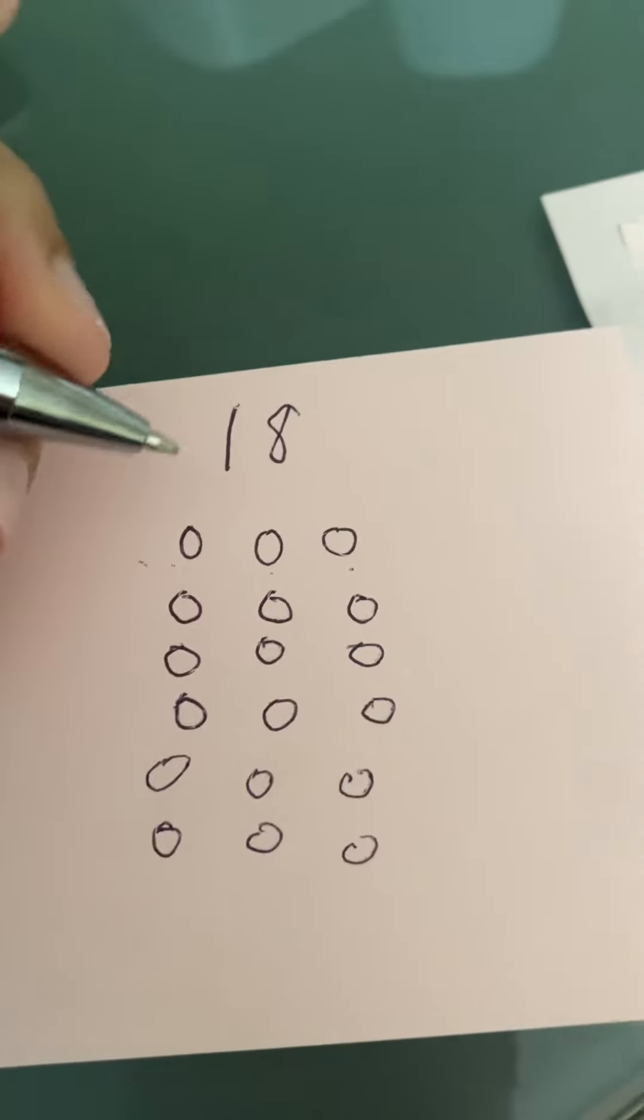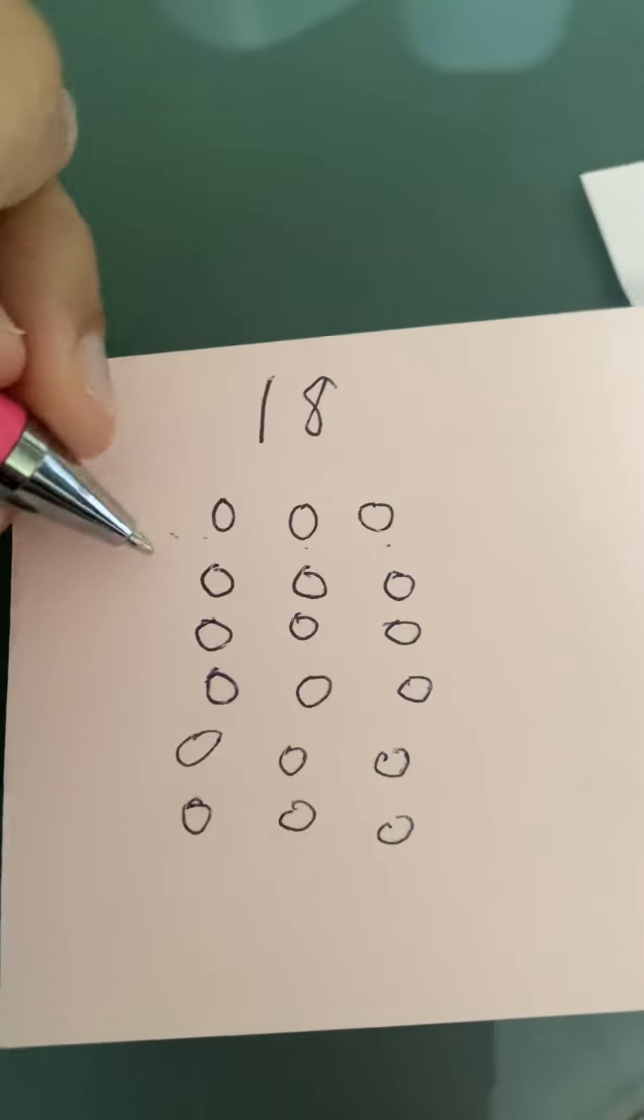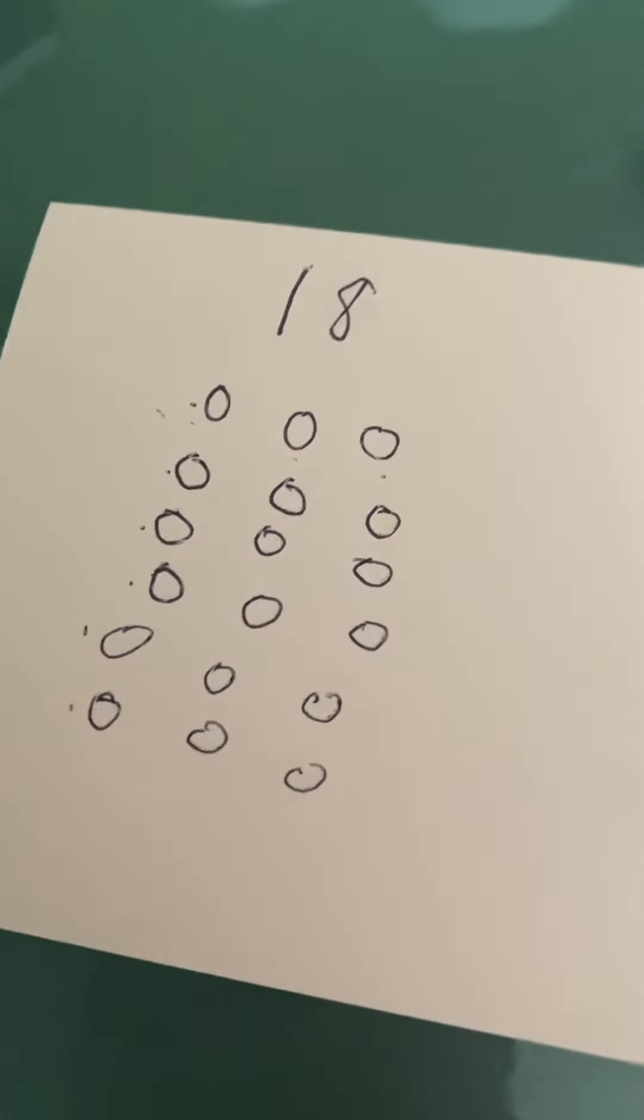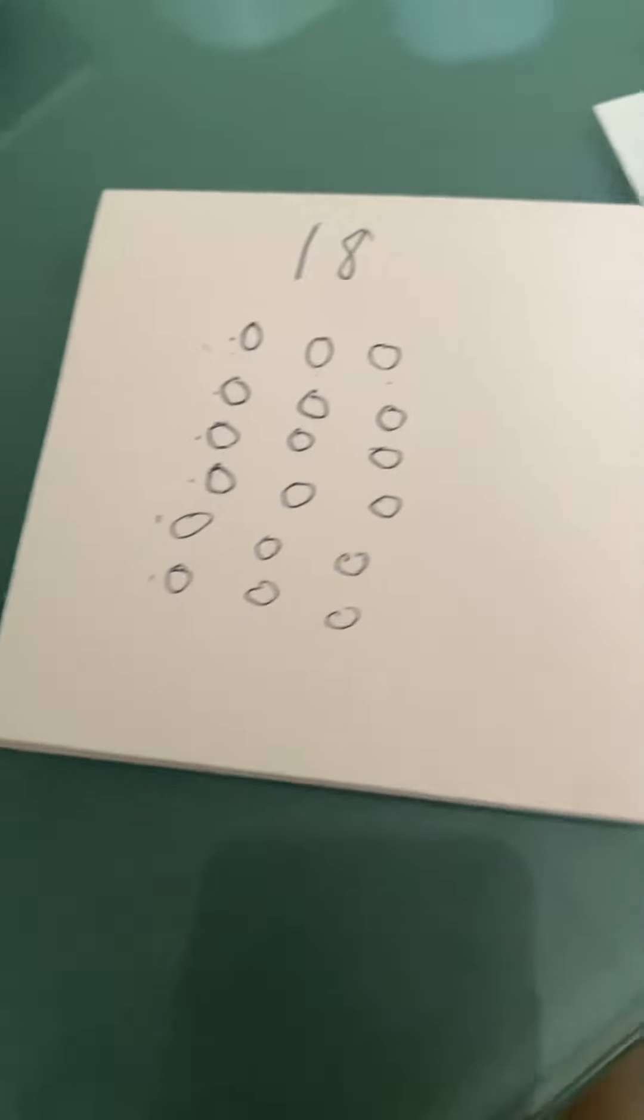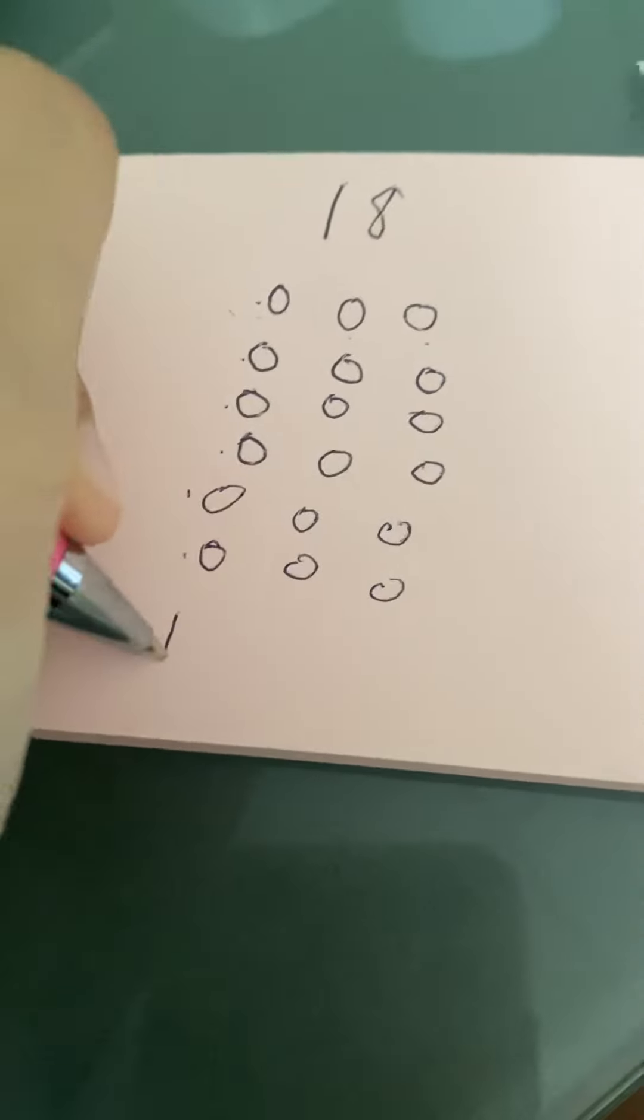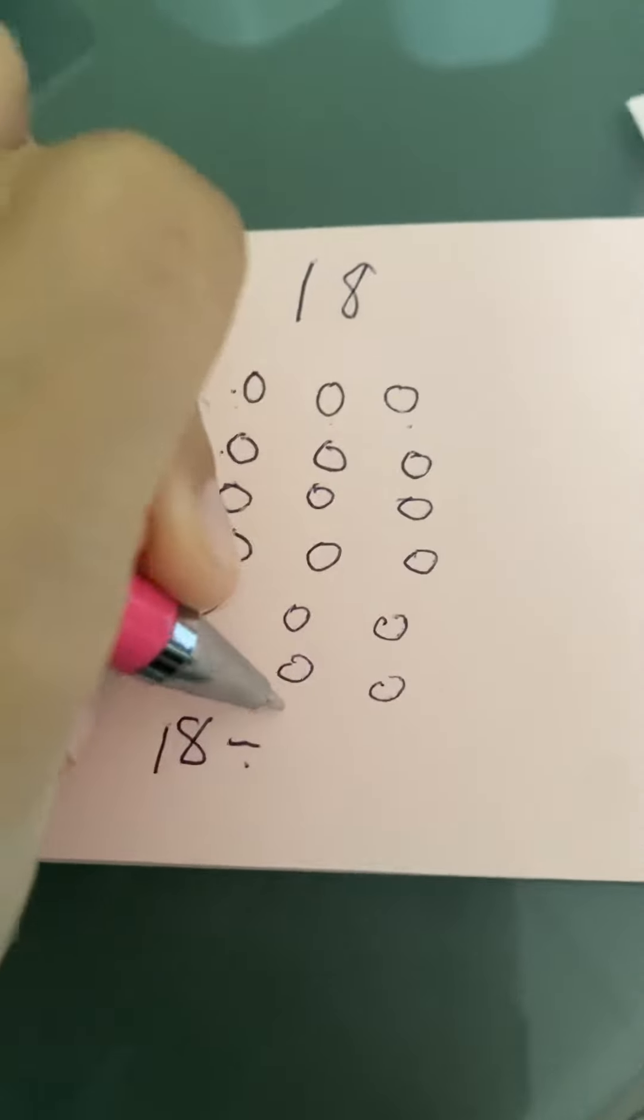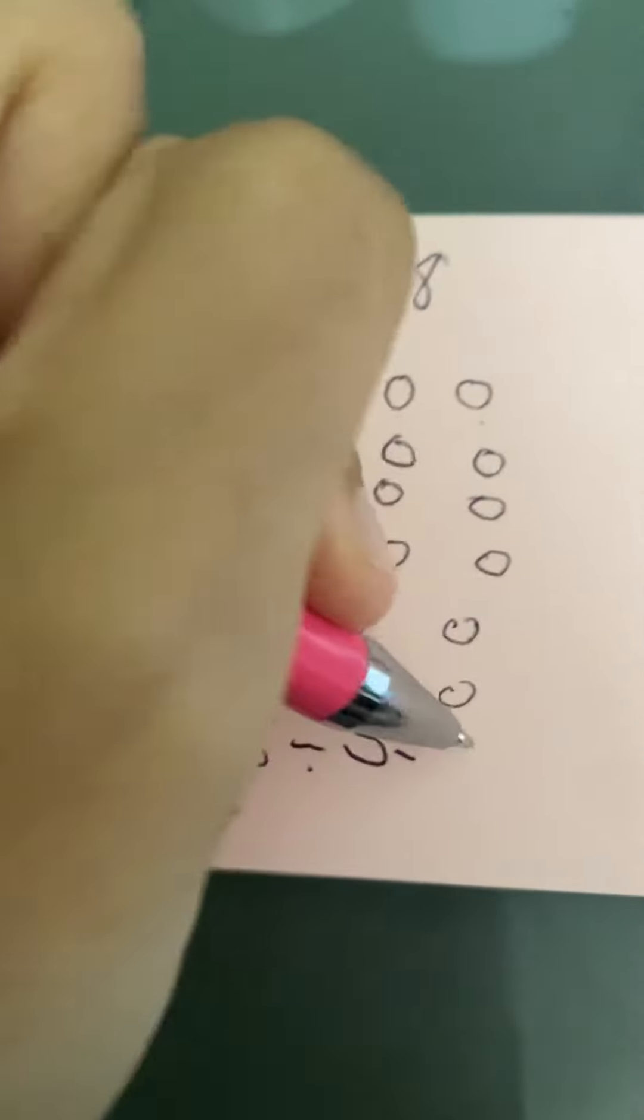And then we're going to count how many are in each column. One, two, three, four, five, six. So there are six coins in each column. So that means that 18 coins divided by three columns equals six rows in each column.